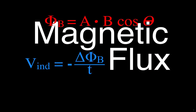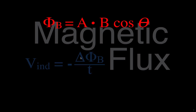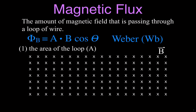In today's video, we are going to be talking about magnetic flux. This is the equation we use to calculate magnetic flux. The magnetic flux is related to the induced voltage in a coil of wire when we change the magnetic flux over time. It's kind of hard to talk about one without the other, but we're going to talk about magnetic flux first, and then in coming videos we'll talk about induced voltage due to changes in magnetic flux.